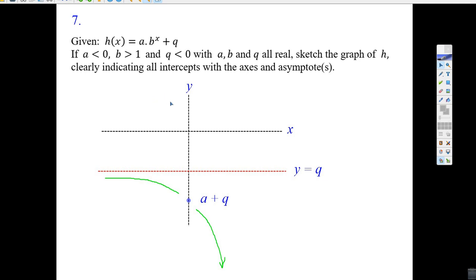If you know how exponential equations work, like for example here, it says q is less than zero. You've got to know that q there means it's the asymptote. So y equals q—I don't know where it is, but it's got to be less than zero.